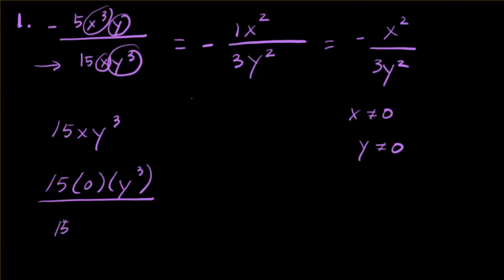What happens if y is zero? So we have 15x, zero to the third is zero. And when we multiply 15x times zero, this entire denominator is gonna become zero.